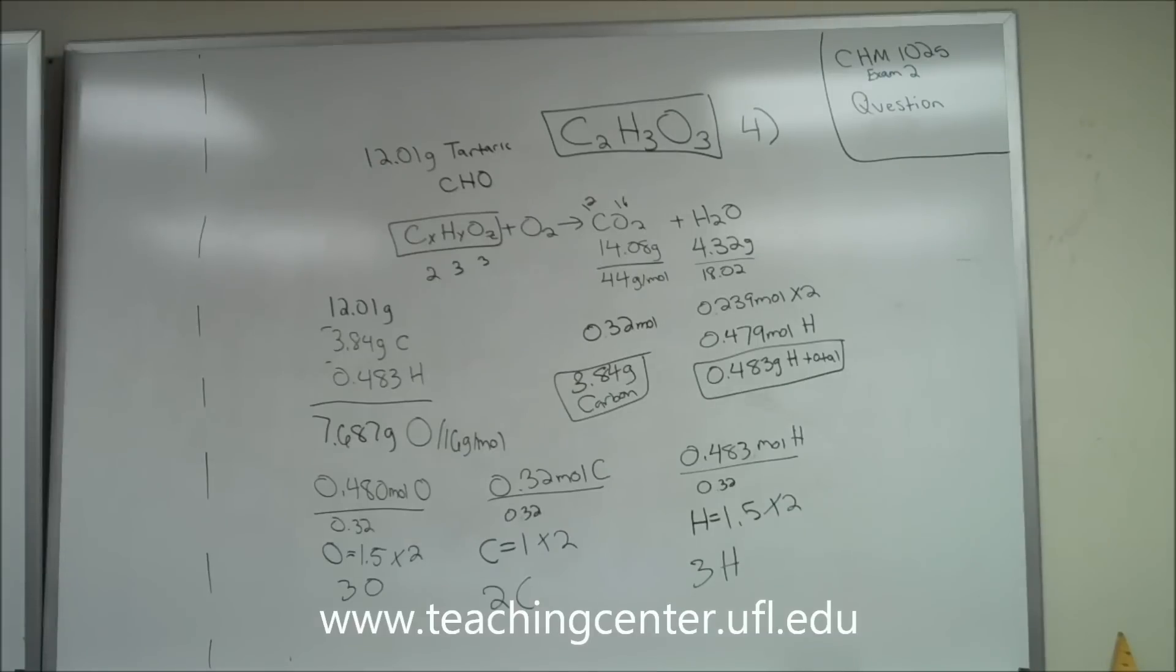So remember, find out moles of carbon and hydrogen, then convert to grams, subtract the grams from your total, and then go back, find your grams of oxygen, find your moles of oxygen, and then convert moles to the formula.